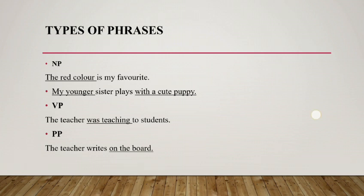Types of phrase. There are five types of phrase. The first one is noun phrase. A word or group of words used to name something, such as an object, subject, or complement of a sentence, is called a noun phrase. For example, 'the red color is my favorite color' — 'the red color' is the noun phrase.